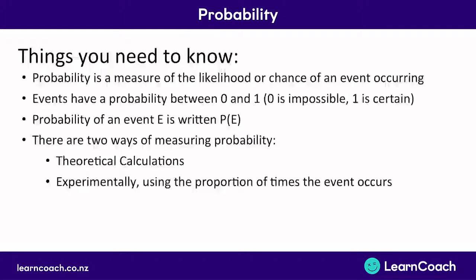In theory we expected 5 out of 10, but an experiment showed that according to Sam, 4 out of 10 throws should be tails. This is called an experimental probability. Often in real life, we use experimental probabilities to back up our theoretical probabilities, not the other way around.